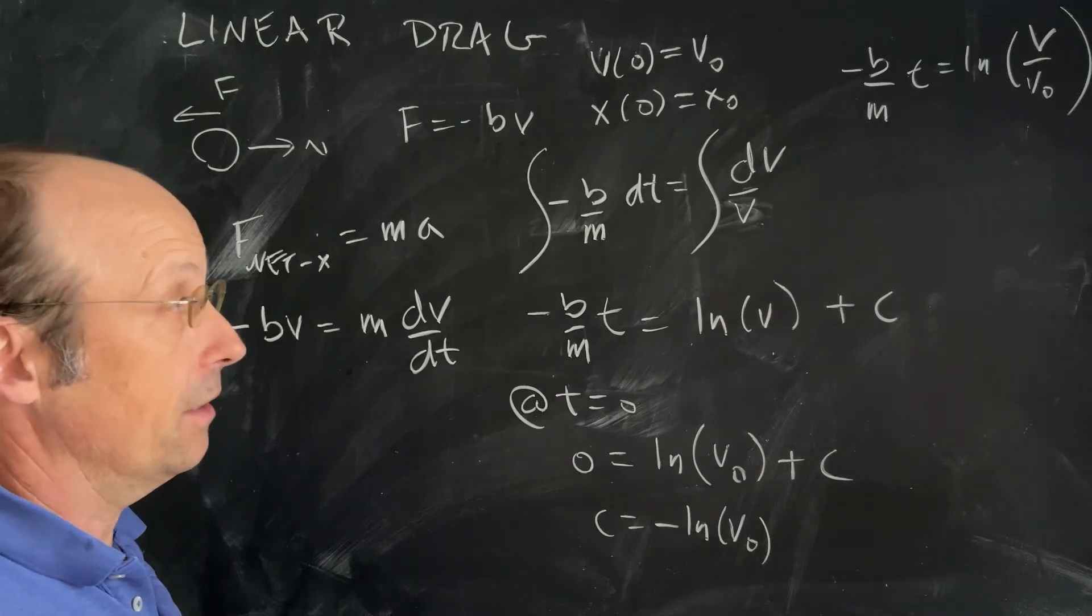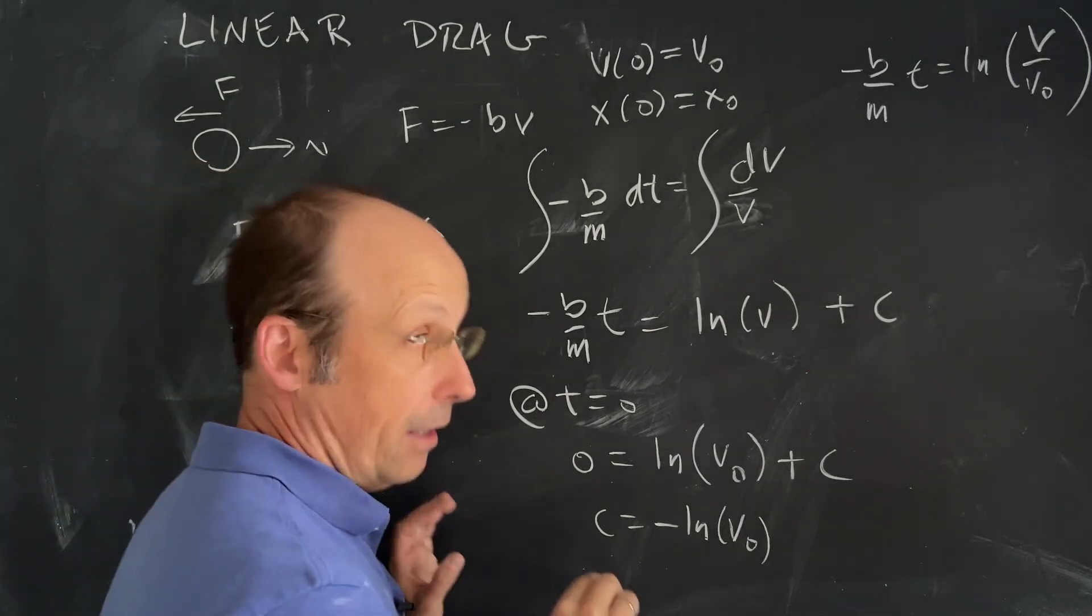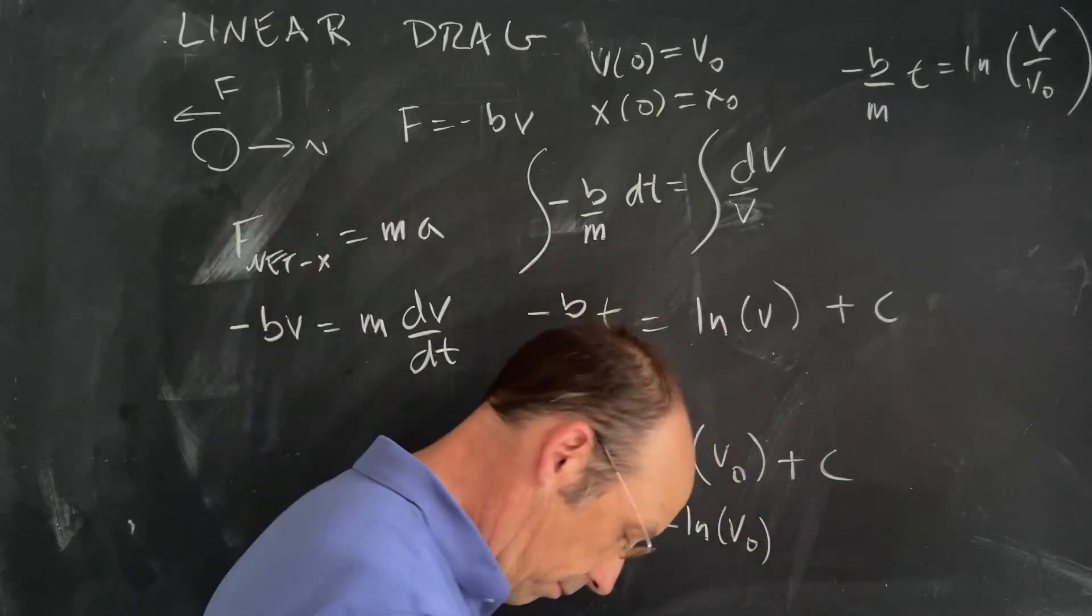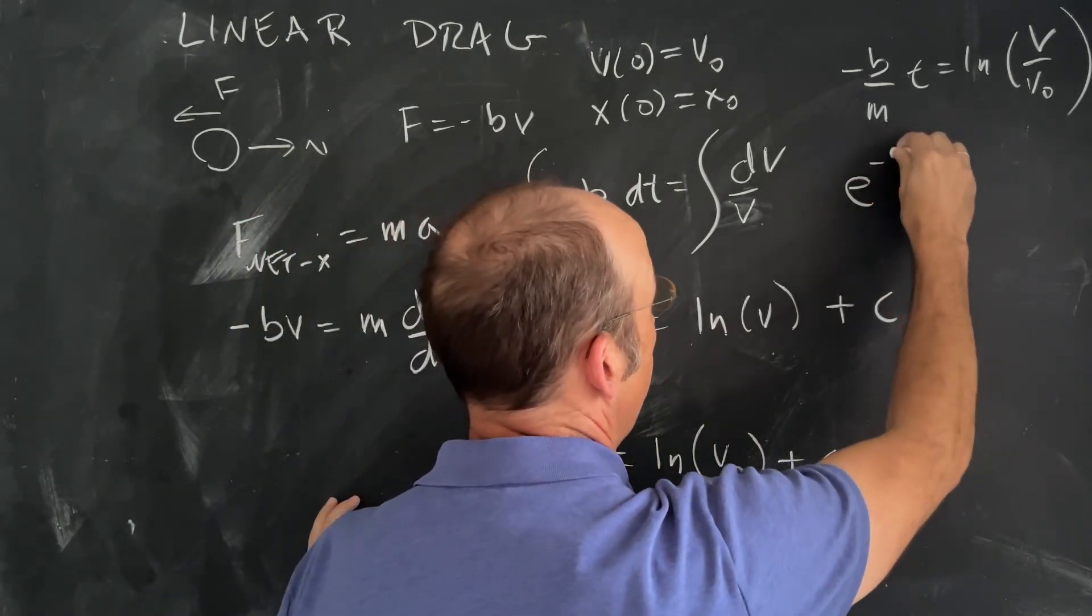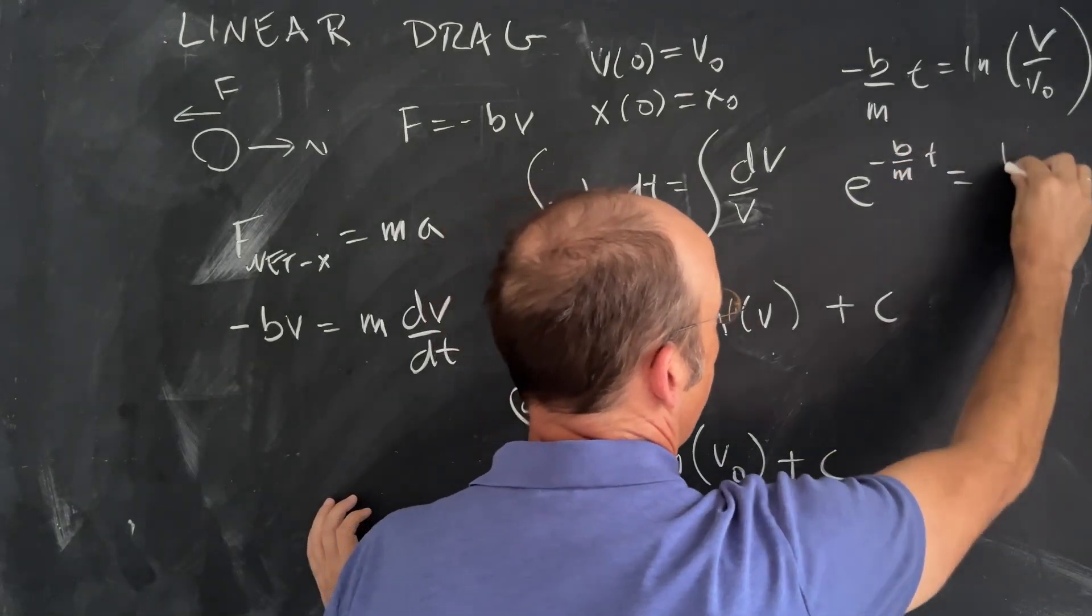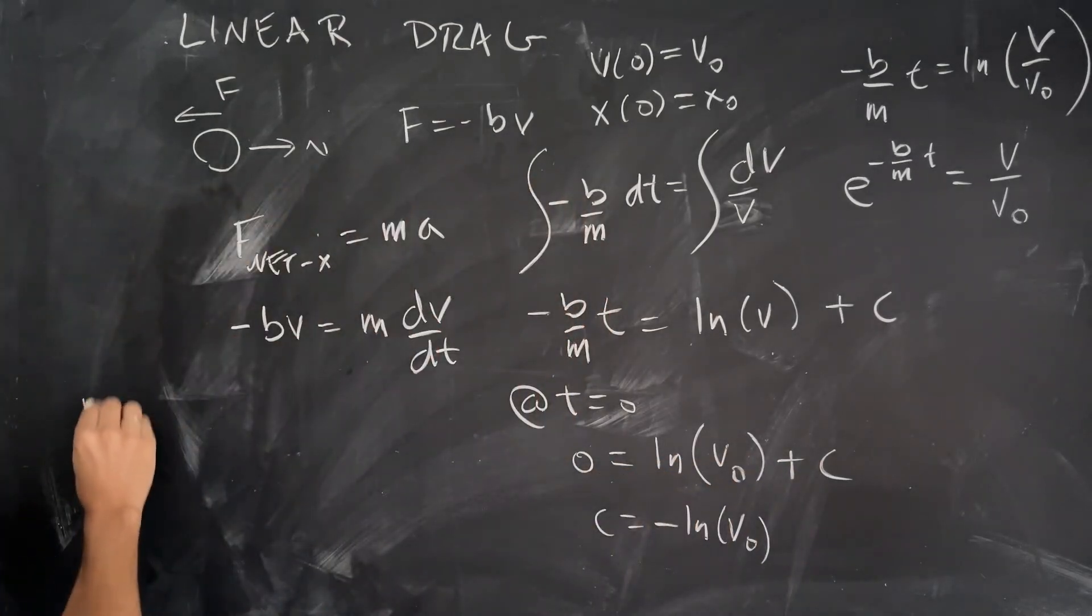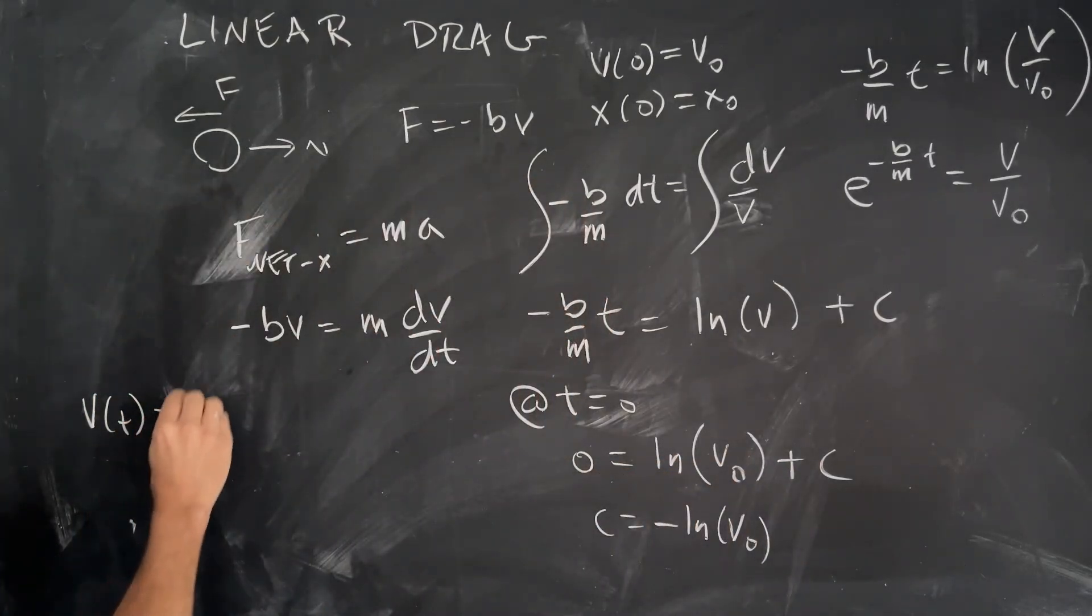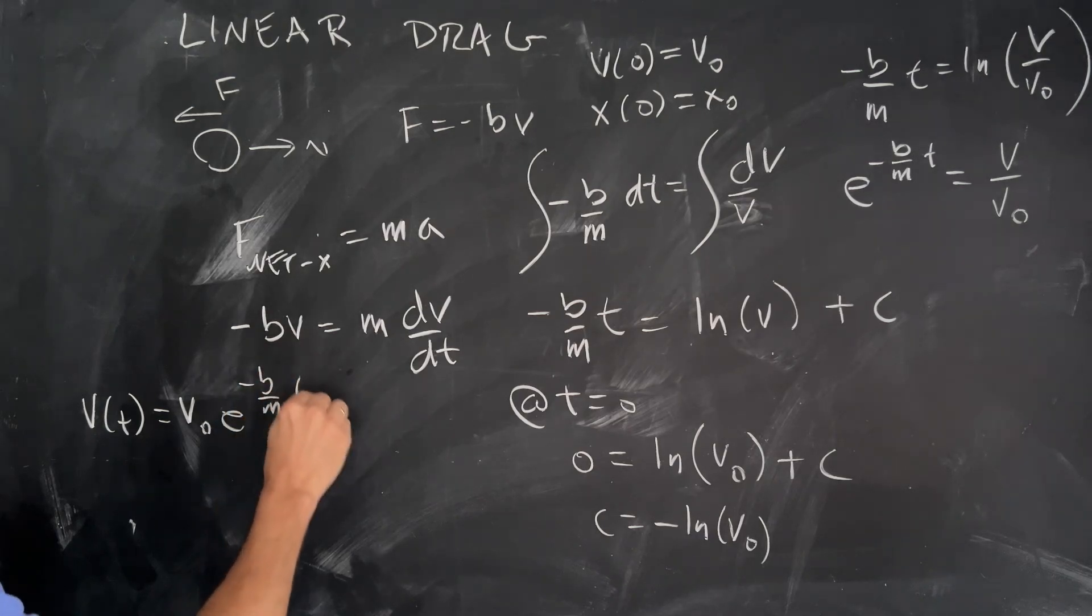I don't like it in that form, so let's raise each side to the exponential e. That's going to give me e to the negative b over mt equals v over v₀. Or v as a function of t is v₀ times e to the negative b over mt.